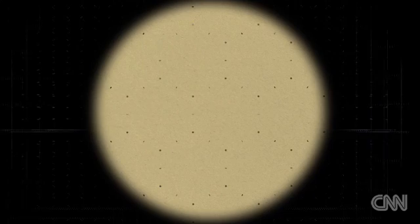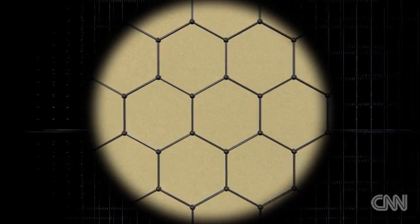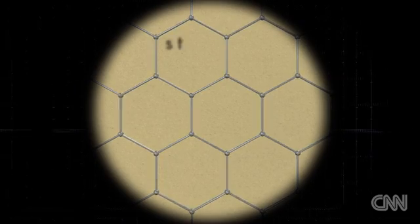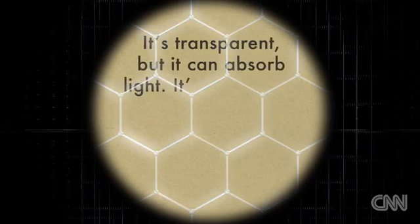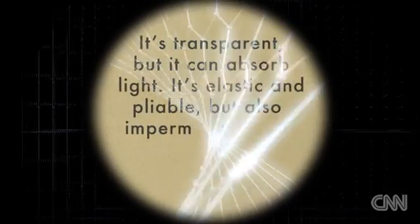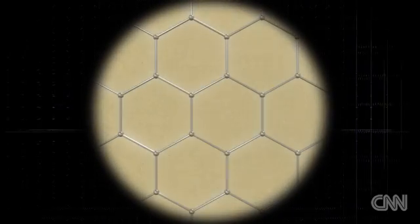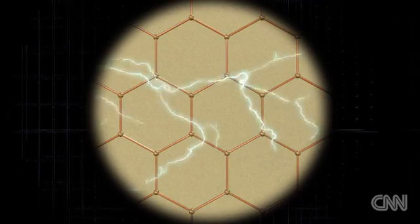What they discovered was graphene, a single layer of carbon atoms arranged in a honeycomb pattern, which gave the material extraordinary properties. It's transparent, but it can absorb light. It's elastic and pliable, but also impermeable to all gases and liquids except for water. And it's the world's best conductor of heat and electricity.